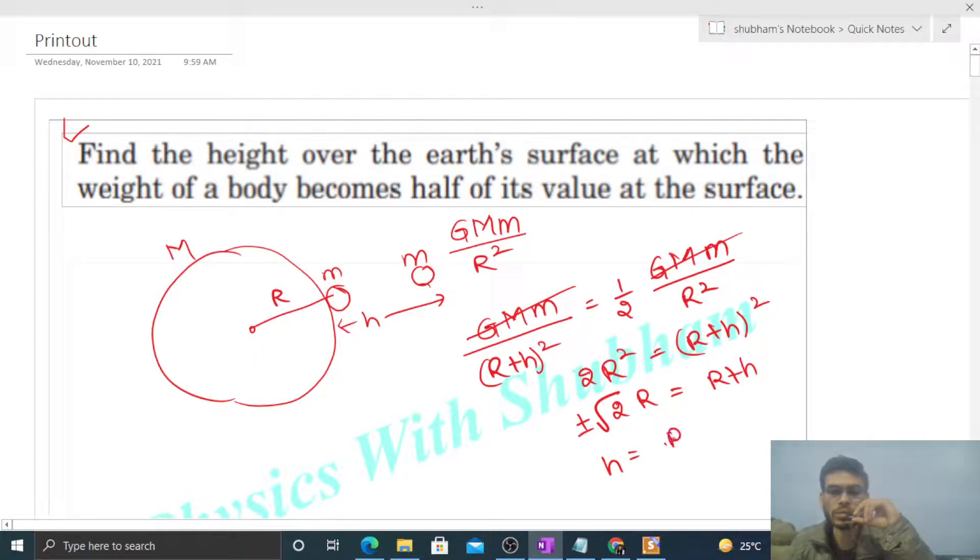Minus r, so r times plus minus square root 2 minus 1. Now h cannot be less than 0, it means here we will take plus, right? So square root 2 minus 1 into r, that is the value of h.